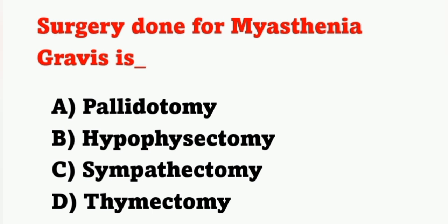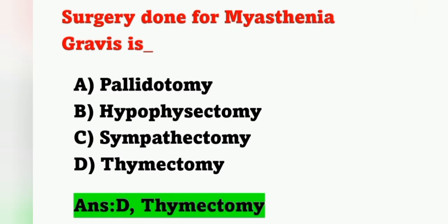Next question: Surgery done for myasthenia gravis is — options: option A, pallidotomy; option B, hypophysectomy; option C, sympathectomy; option D, thymectomy. The surgery done for myasthenia gravis is thymectomy. Option D is the correct answer.